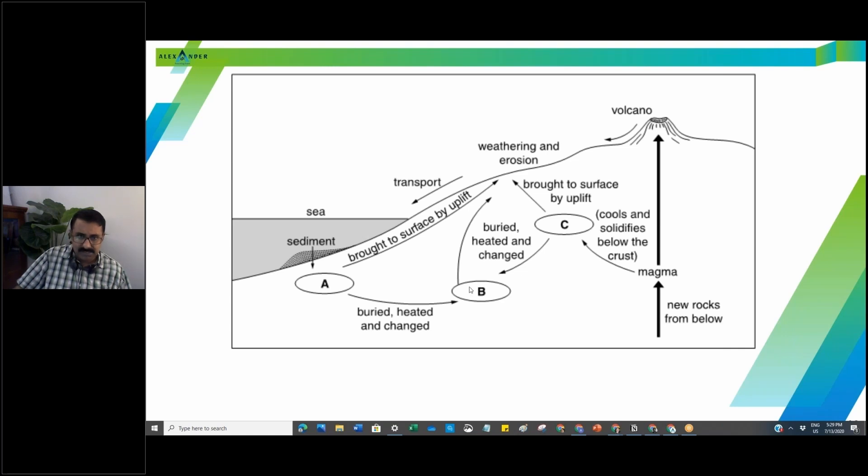What else? B is metamorphic. It's heated and changed. When you say that word changed, you can easily understand that it's metamorphic. What's the other word for transport? Transport and deposition. Together. What do you call it? They basically took erosion. That's right. Even though here it says weathering and erosion, erosion is basically that transport and deposition. And where it will form these layers.